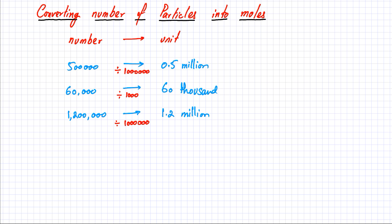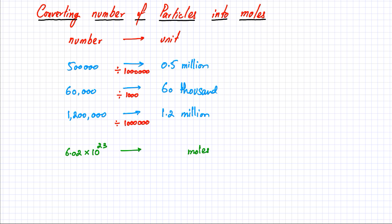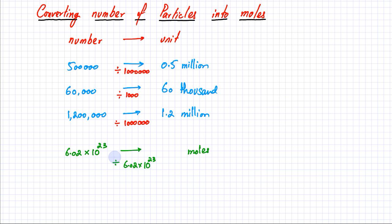In exactly the same way, if you want to convert a number into moles, you divide by what one mole stands for. One mole stands for 6.02 × 10²³. So if I have 6.02 × 10²³ particles and divide by 6.02 × 10²³, I get 1 mole — which we already knew: one mole equals 6.02 × 10²³ particles.